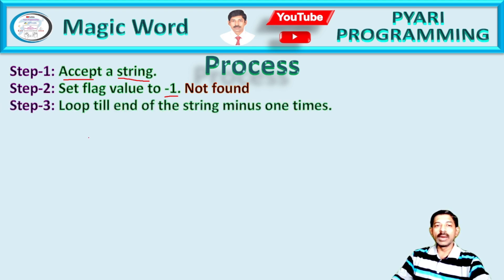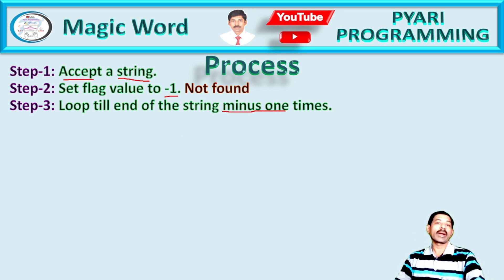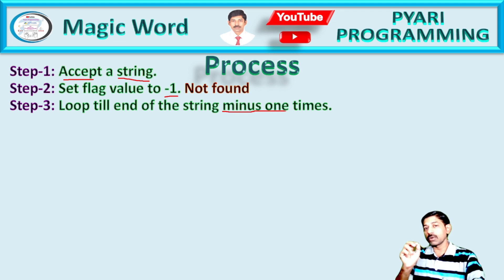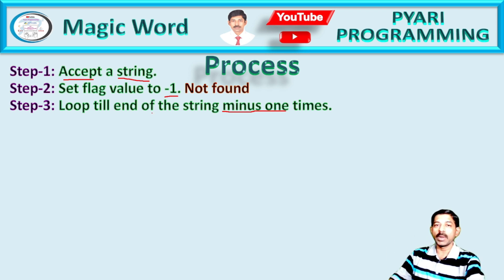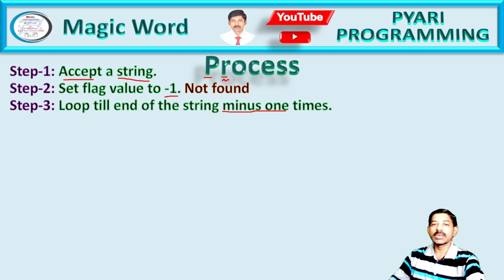Then I will loop till the end of the string minus one. Why minus one? When I am checking the current character with the next character, when I reach the last character, there is no next character. For example, if I have a current character and next character is 'R', then current character 'R' and next character 'O', then current character 'O' and next character 'C'.